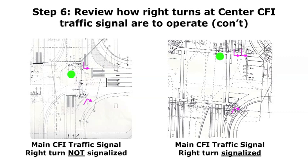My concern is that the northbound right turn movement, shown with a right turn purple arrow, is going to be seeing a green ball at the same time that the southbound left turn movement with the advanced CFI traffic signal is going to be seeing a green arrow. The motorist is going to be so accustomed to making a right turn on a green ball and not worrying about conflicting traffic that they're going to make this movement, causing confusion — one thinking they have the right of way because of the green ball, and the left turn thinking they have it because of the green arrow.